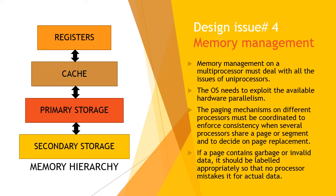Memory management on a multiprocessor must deal with all the issues found on uniprocessor computers, and in addition the OS needs to exploit available hardware parallelism. Hardware parallelism is present in the memory hierarchy: data transfer between registers and cache does not need the system bus, so when data is being transferred between primary and secondary storage, a simultaneous transfer can take place between registers and cache — two transfers in the time of one.